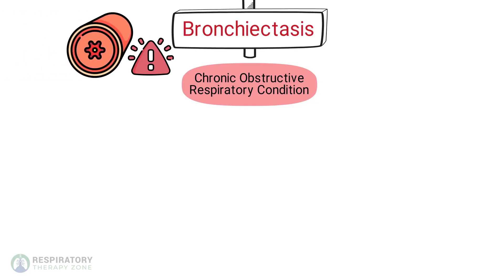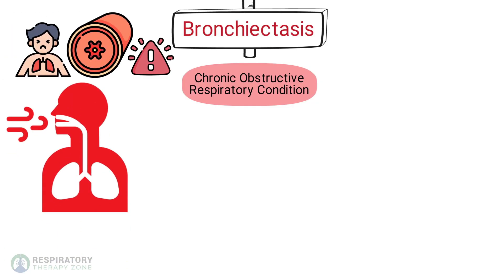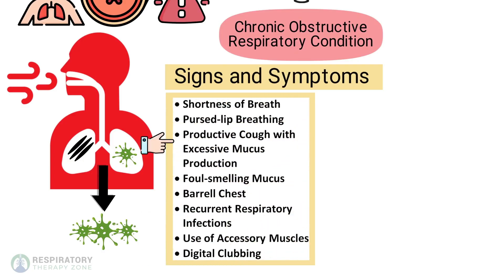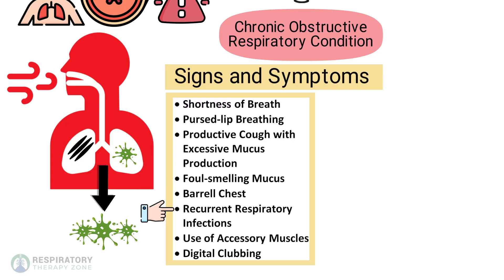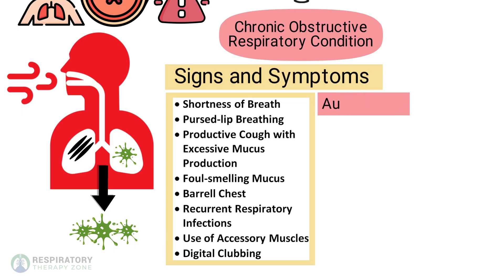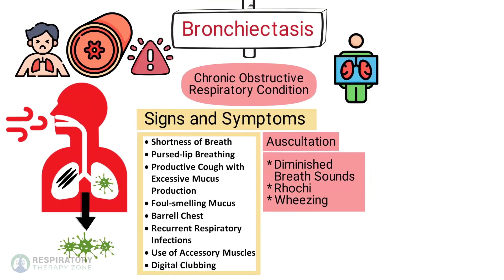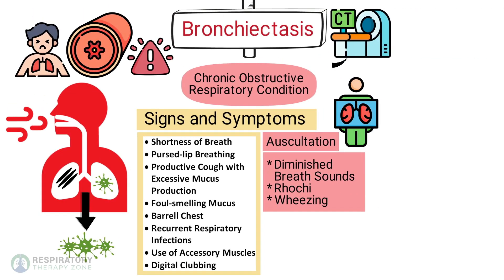Bronchiectasis is a chronic obstructive respiratory condition characterized by the abnormal and permanent enlargement of the bronchi. This dilation is often the result of an infection or other condition that injures the walls of the airways or prevents the airways from clearing mucus, resulting in large quantities of purulent mucus. Signs and symptoms include shortness of breath, pursed-lip breathing, productive cough with excessive mucus production, foul-smelling mucus, barrel chest, recurrent respiratory infections, use of accessory muscles, and digital clubbing.